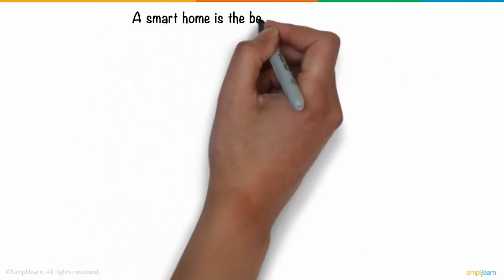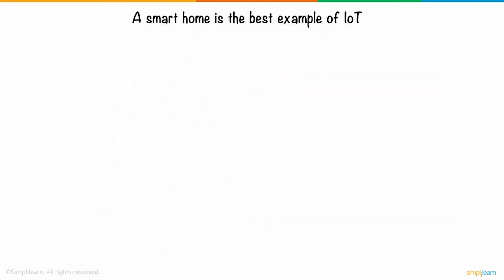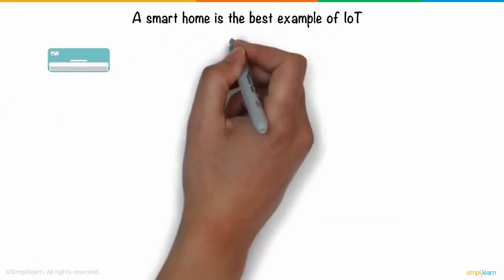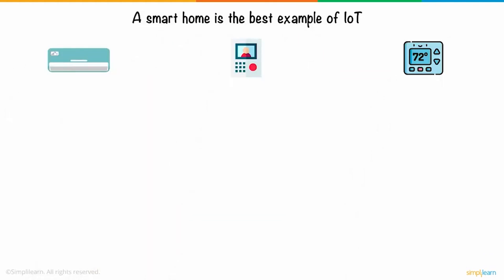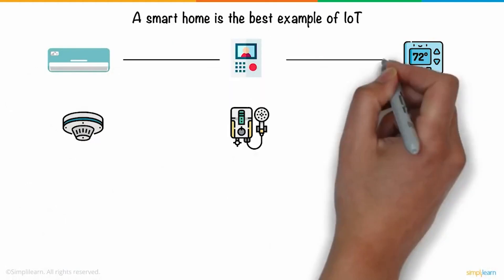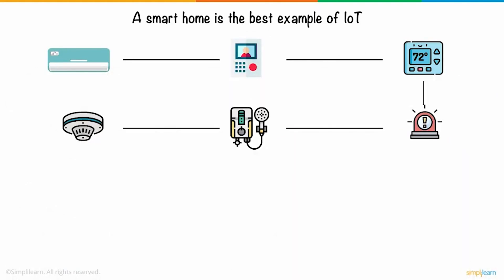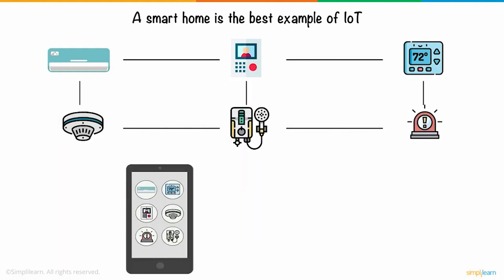A smart home is the best example of IoT. Home appliances like the AC, doorbell, thermostats, smoke detectors, water heaters, and security alarms can be interconnected to share data with the user over a mobile application. The user can now get detailed insight into the working of the devices around them.